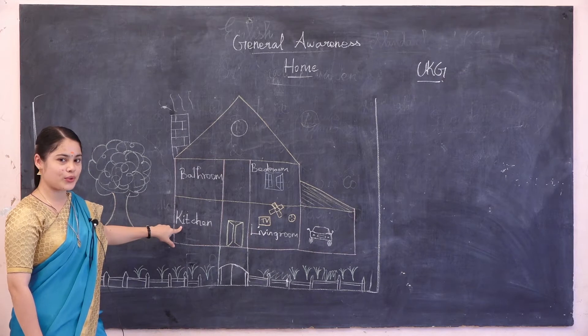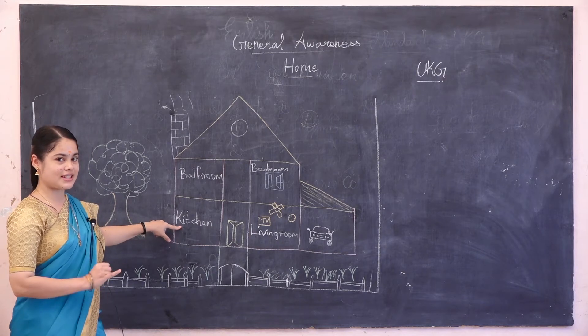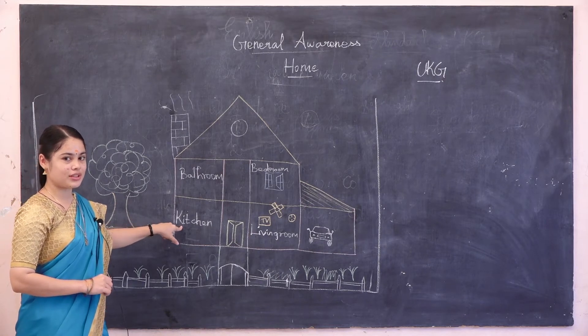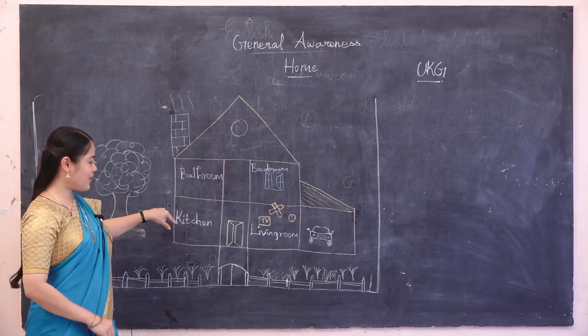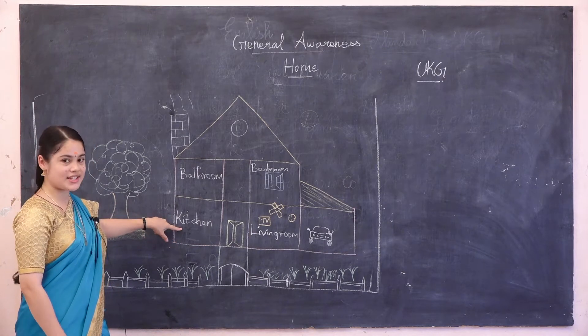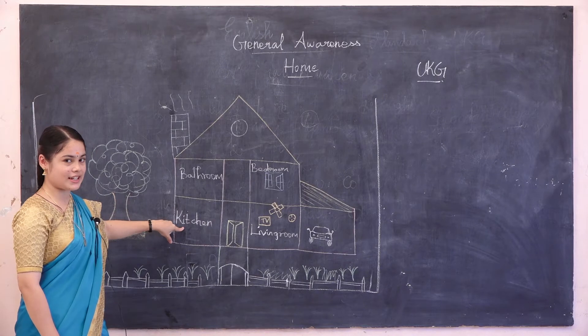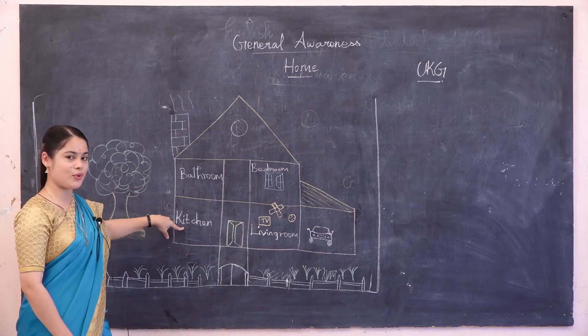In the kitchen, what do we have? Gas stove, vegetables. In the kitchen, we are going to do something.